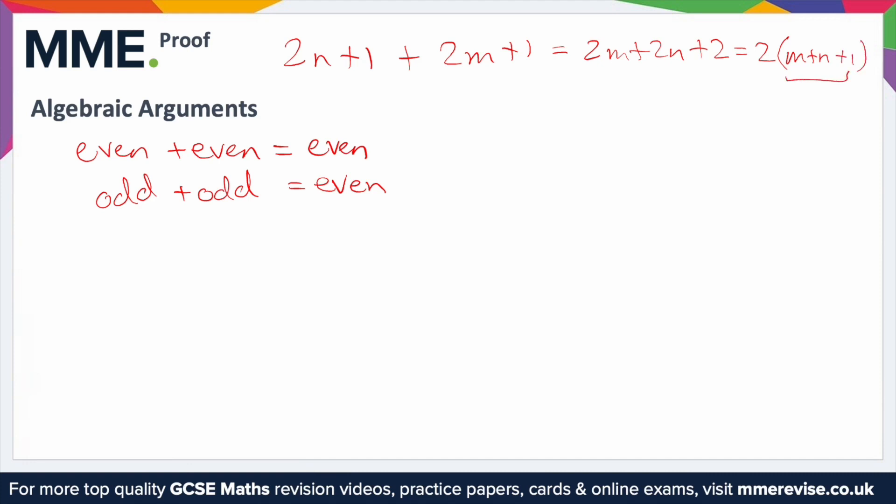We know that's going to be an integer because you've got m as an integer plus n that's an integer plus 1 that is an integer, and then you times it by 2, so it's going to be in the 2 times table, therefore it's even. We can carry this list on. Even plus odd will give you an odd. And of course, you could swap this round, so odd plus even will still give you an odd.